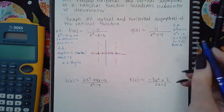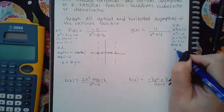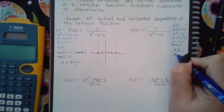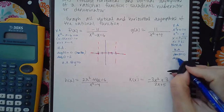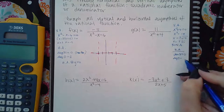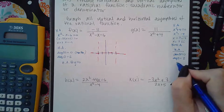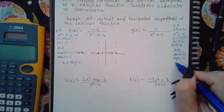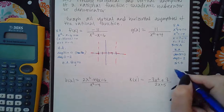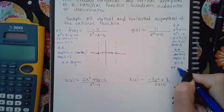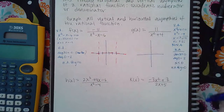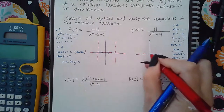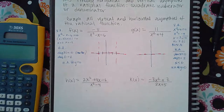For the horizontal asymptote on this problem, the degree of the numerator equals zero because there are no x's, and the degree of the denominator equals two. Since the numerator degree is less than the denominator degree, the horizontal asymptote is automatically at y equals zero. So when graphing this one, I only graph the horizontal asymptote at y equals zero — there are no vertical asymptotes.